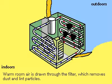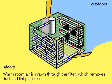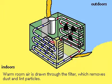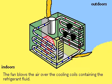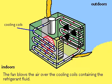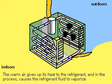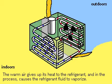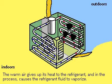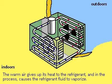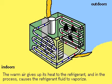Warm room air is drawn through a dust filter by a fan, then blown over the cooling coils which circulate the refrigerant in its liquid state. As the room air flows by the coils, it causes the liquid in the coils to evaporate, and in the process, heat is absorbed by the refrigerant as it turns to gas. The cooled air is blown back into the room.